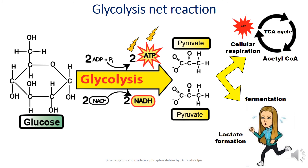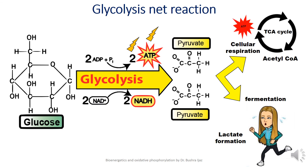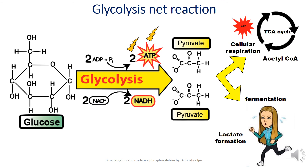Otherwise, the process of fermentation takes place and the end product is lactate or lactic acid. As for the NADH molecules — they can't just pile up in the cell, because cells have only a certain number of NAD and NADH molecules that cycle between oxidized and reduced states. Glycolysis needs NAD to accept electrons in a specific reaction; if no NAD is available because it is all in the form of NADH, this reaction cannot take place and glycolysis will come to a halt.